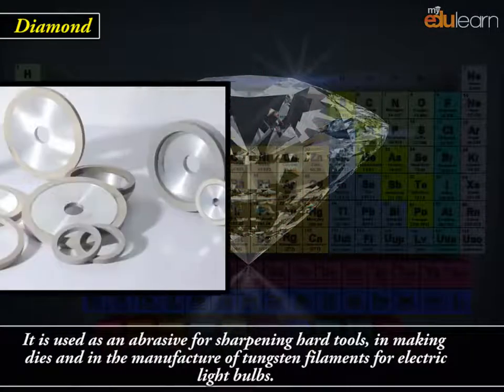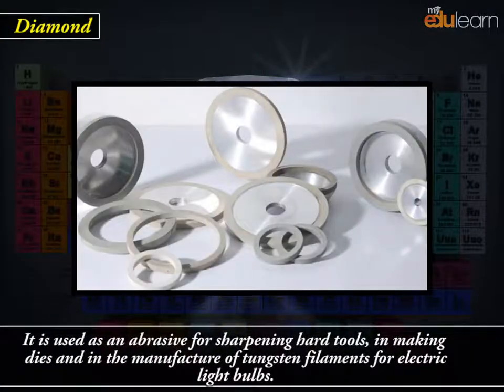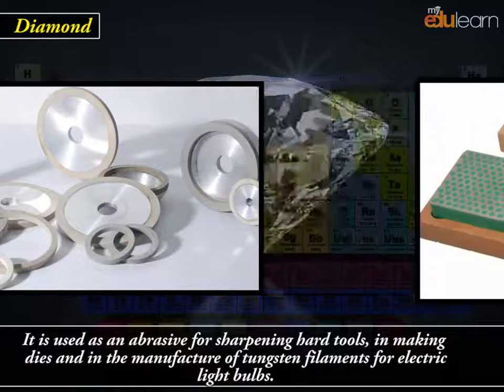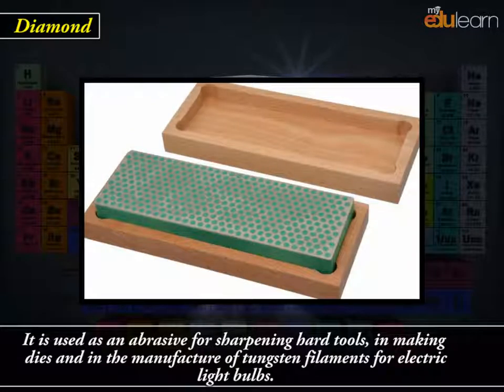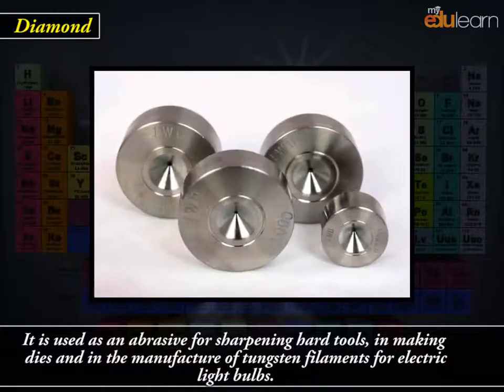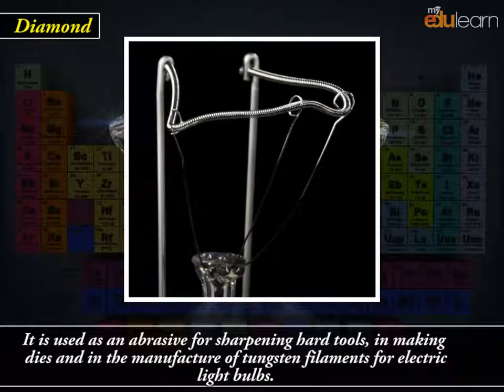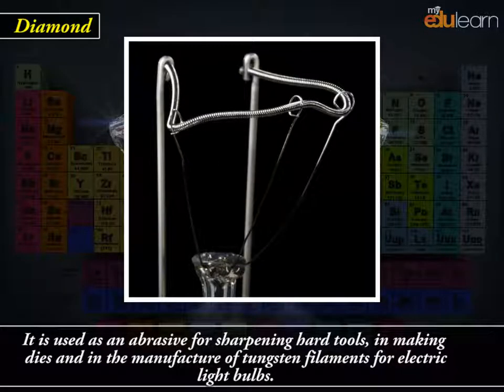The structure extends in space and produces a rigid three-dimensional network of carbon atoms. It is used as an abrasive for sharpening hard tools, in making dyes and in the manufacture of tungsten filaments for electric light bulbs.